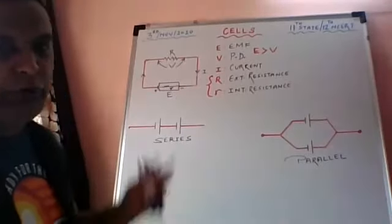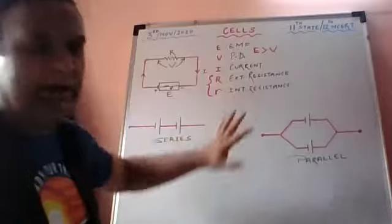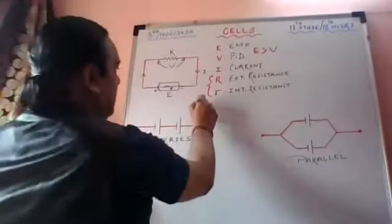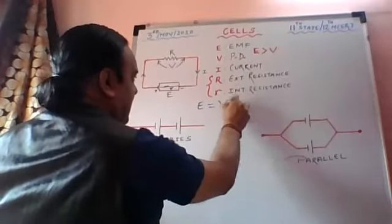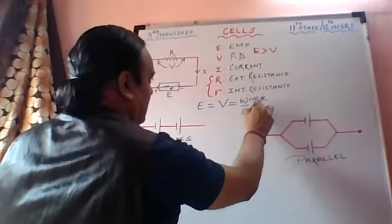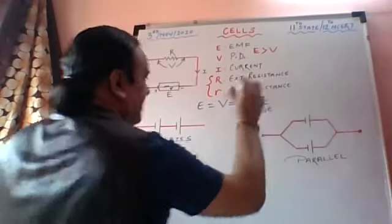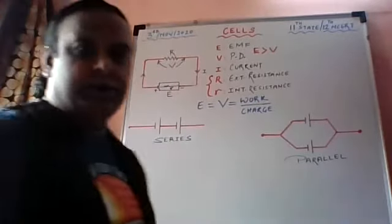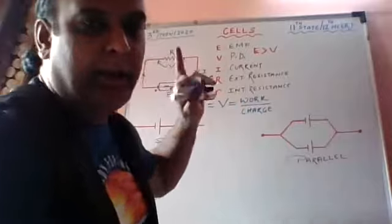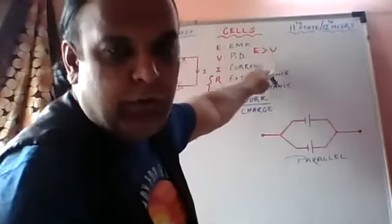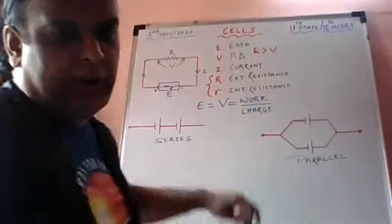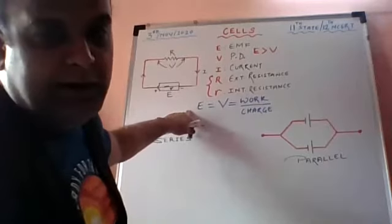Now let us quickly write down the list of formulae we can get from the theory discussed. E, which is same as V in terms of formula, is equal to work upon charge. So E and V — dono cheezein ka formula same, inke unit same. But E ka value hamesha bada. The unit is Joule per Coulomb, which is effectively known as Volt.